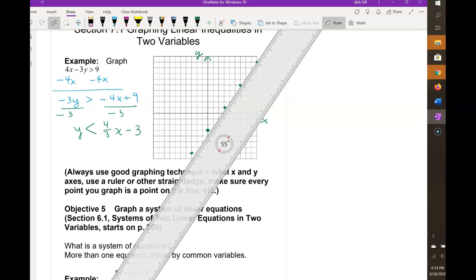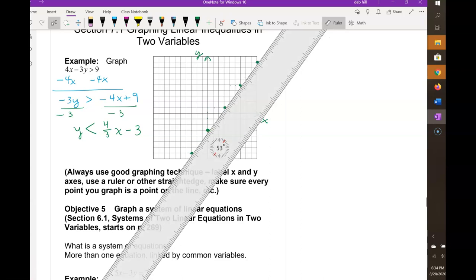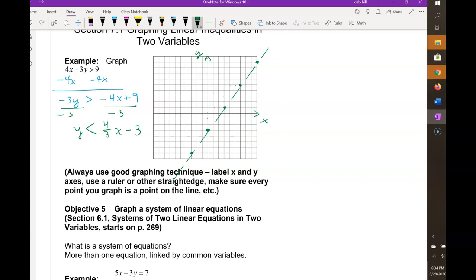Notice that this is a strict inequality, so the line needs to be dashed. Then because we have it in this form with the y by itself on one side, we can see that we want values of y that are below the line because we have y values that are less than the ones on the line. So you can put your arrows indicating I want the region below the line as my graph. Make sure you use good graphing technique.